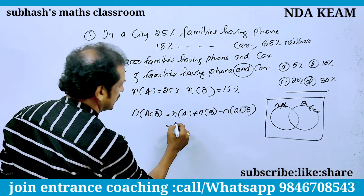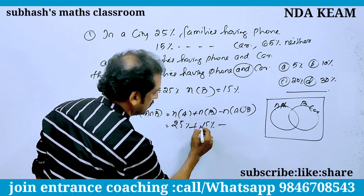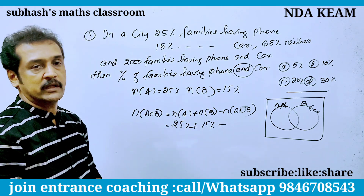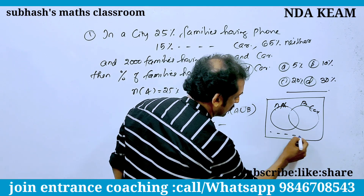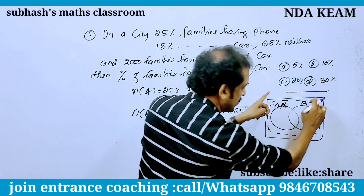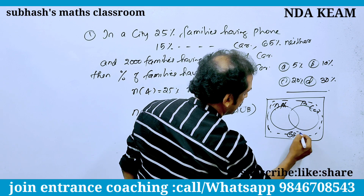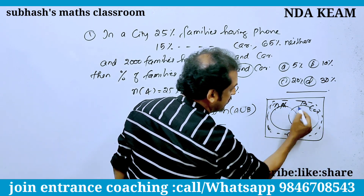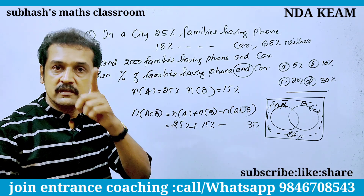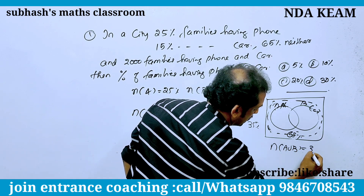N of A is 25%, N of B is 15%, minus N of A union B. Now, the percentage of N — 'neither' — is the percentage. This gives us N of A union B.